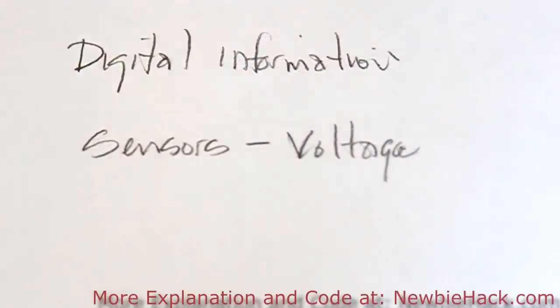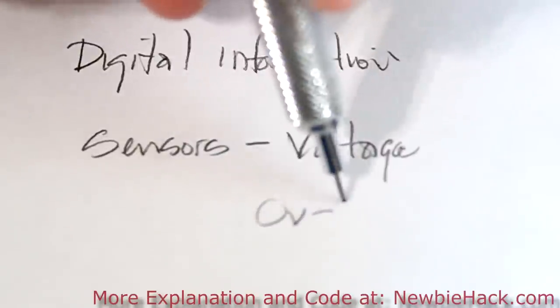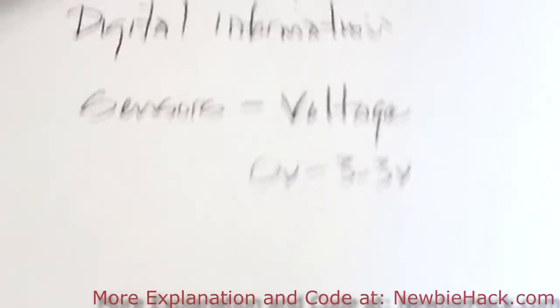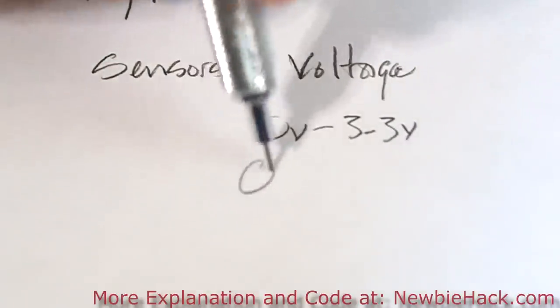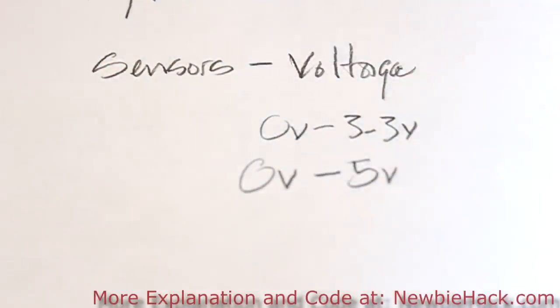In a range of, say, zero volts to 3.3 volts, for example, or zero volts to five volts. And it can be anywhere in between. So how do you make this communication happen within the microcontroller?